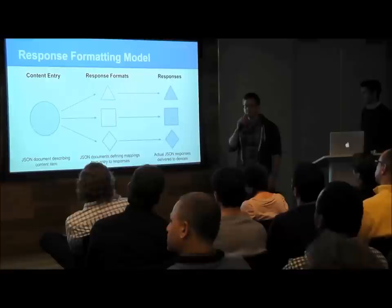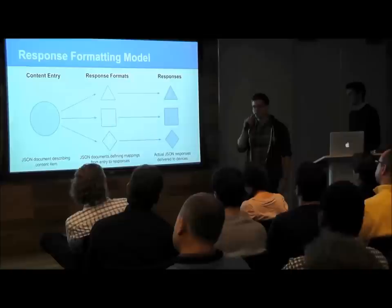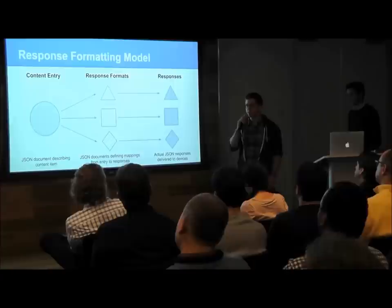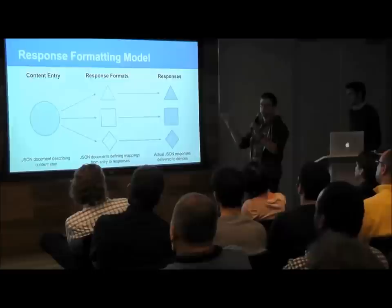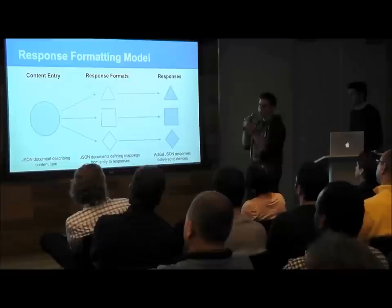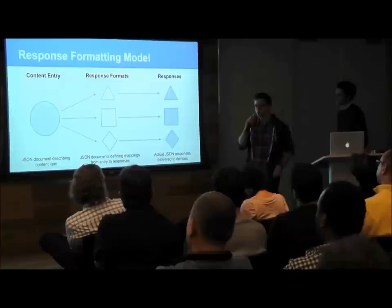In the middle we have entities called response formats, which are JSON schemas that serve two purposes: to define the format and structure of responses delivered to a certain type of device, and to define how to populate that response with the correct data. Starting from the left, there's a process called deployment by which we generate responses — the content entry is processed by code that takes response formats and uses them to generate actual responses, each stored as a JSON document in a collection specific to its type.